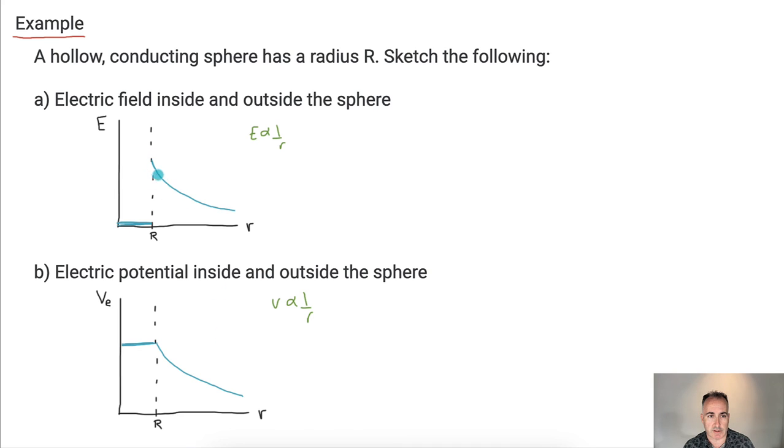Do you notice the difference? The difference is this one here goes like this - it goes up and then it goes down. Whereas the second one just goes like this, it just follows that 1 over R. That's it.